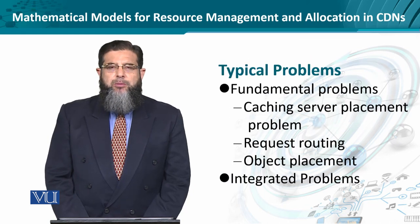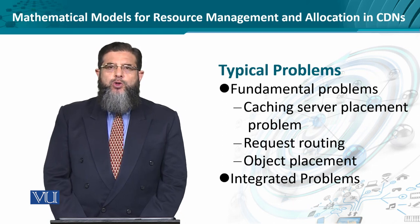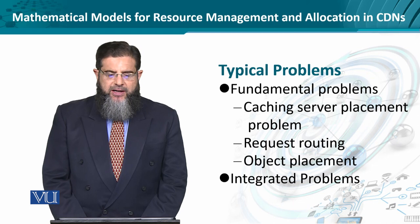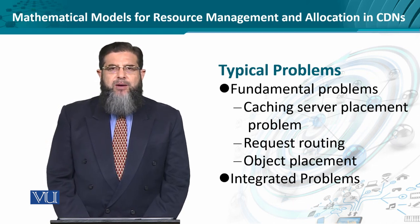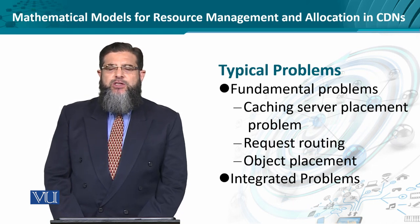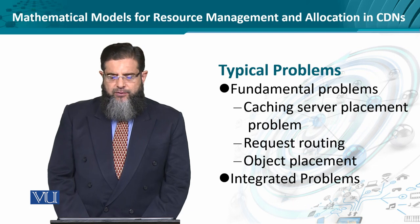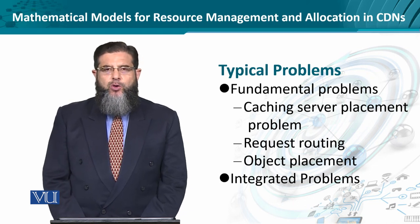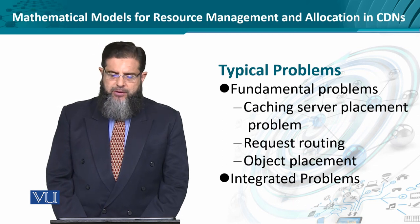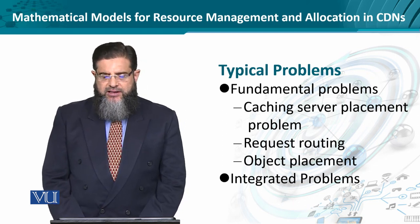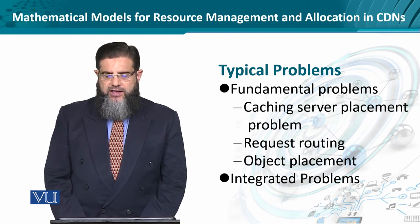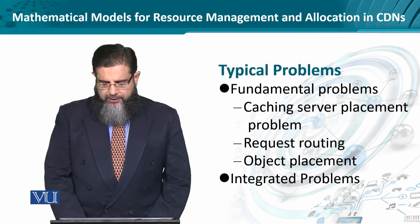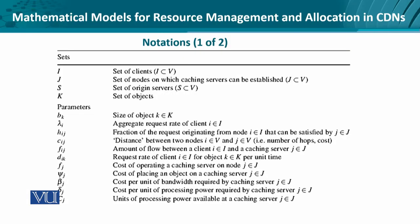The typical problems we face in CDNs are already known to us. For the sake of mathematical formulation, let's look at these in two categories. We have fundamental problems — problems which are easy to state and easy to model. And then we have integrated problems that could comprise more than one of these fundamental problems. A typical example is cache server placement, request routing, and object placement. These are all very specific issues related to CDNs.